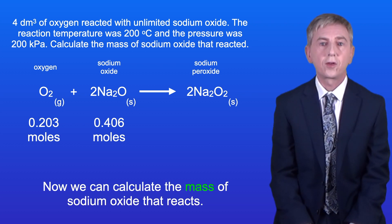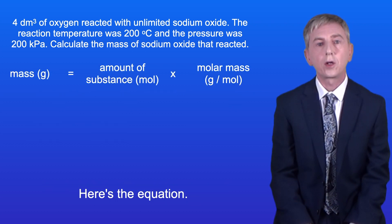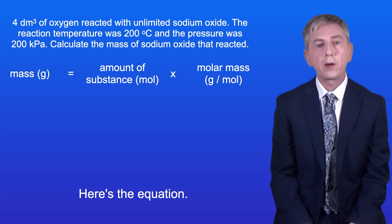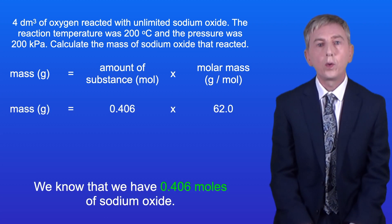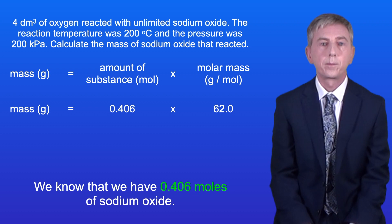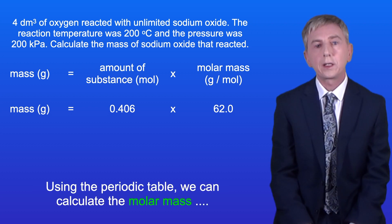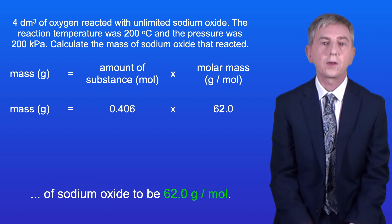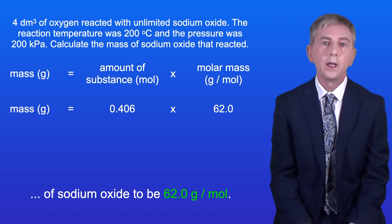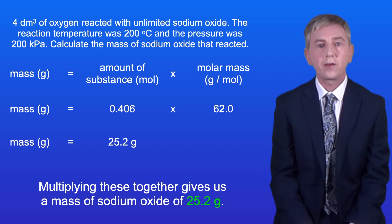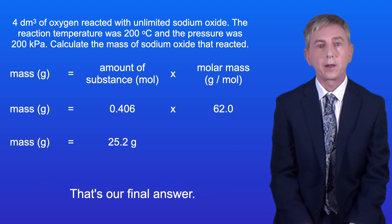Now we can calculate the mass of sodium oxide that reacts. The mass in grams equals the amount of substance in moles multiplied by the molar mass. We know that we've got 0.406 moles of sodium oxide. Using the periodic table we can calculate the molar mass of sodium oxide to be 62.0 grams per mole. Multiplying these together gives us a mass of sodium oxide of 25.2 grams — and that's our final answer.